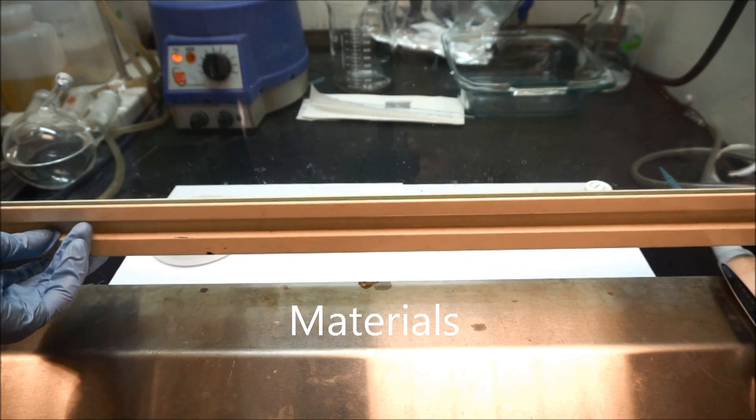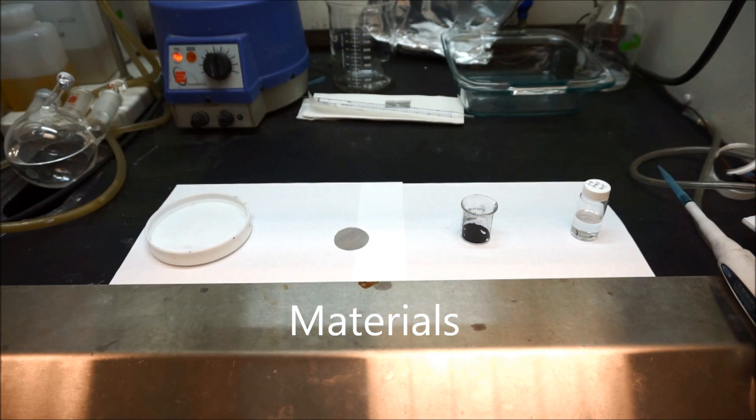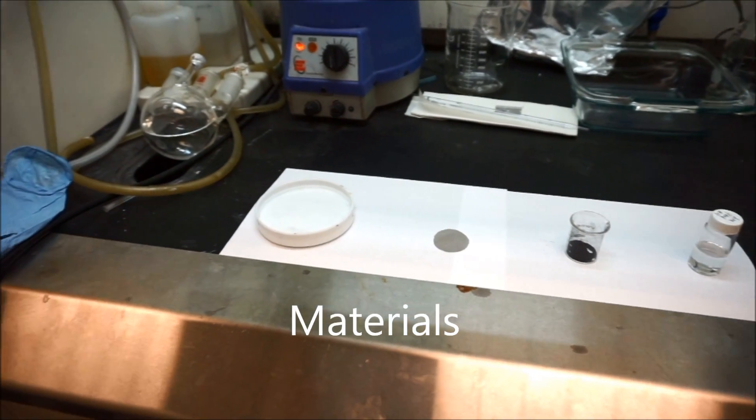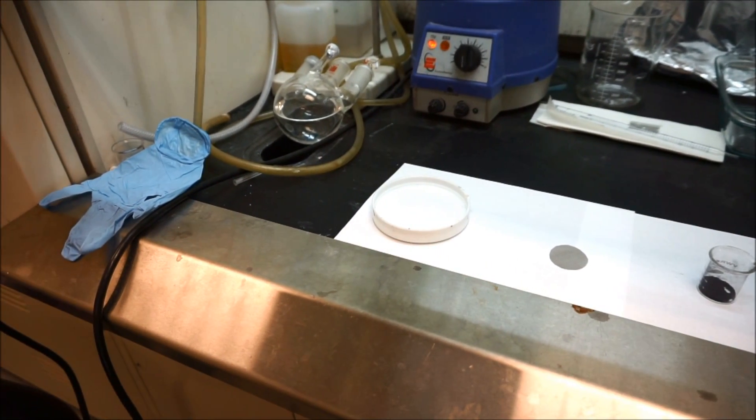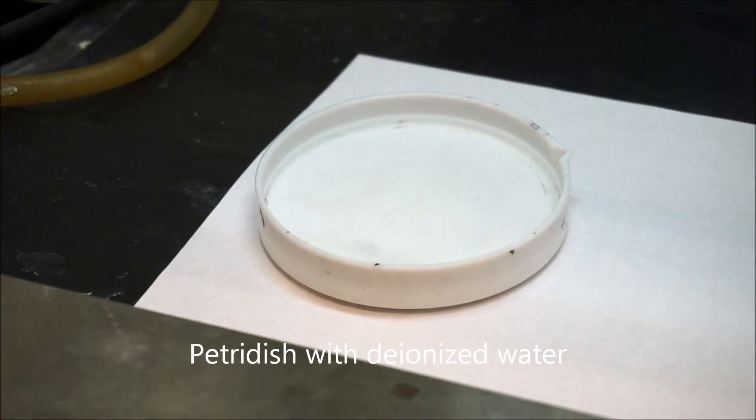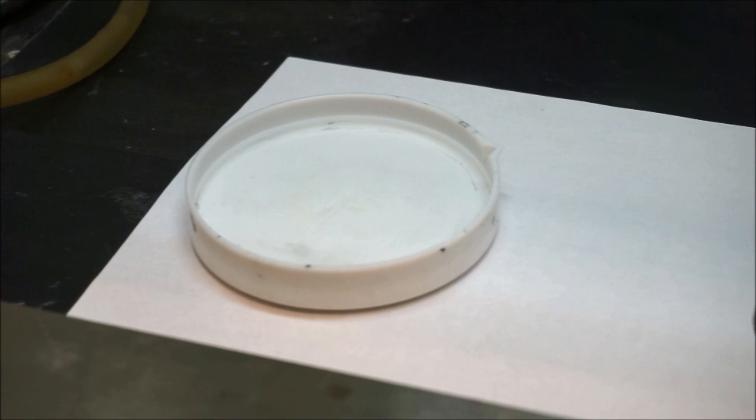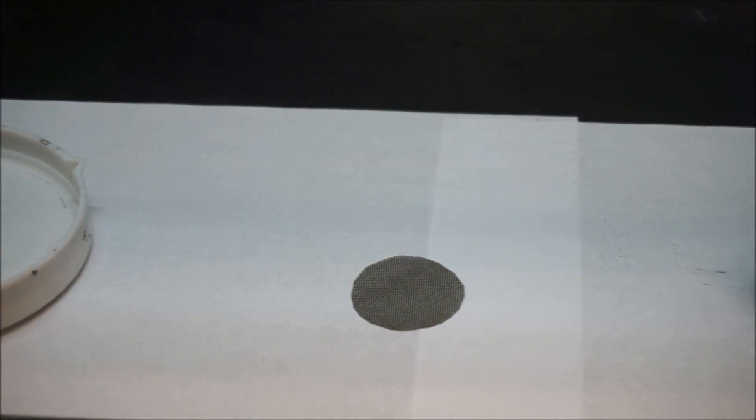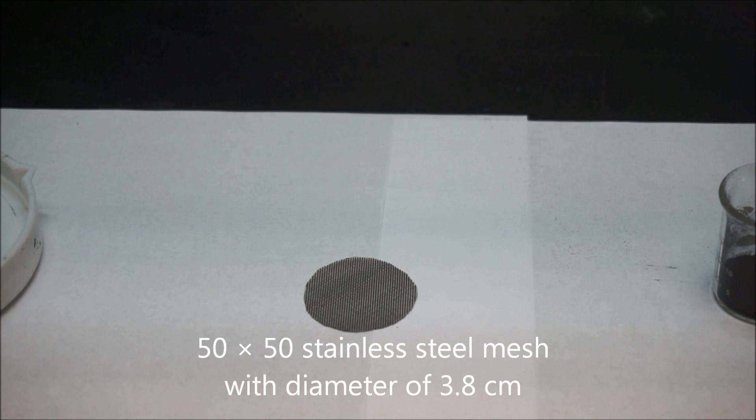So first let's take a look at the materials and the equipment we need to use to make the active carbon air cathodes. The first one is the petri dish filled with deionized water and the second one is the 50 by 50 stainless steel mesh as the current collector.